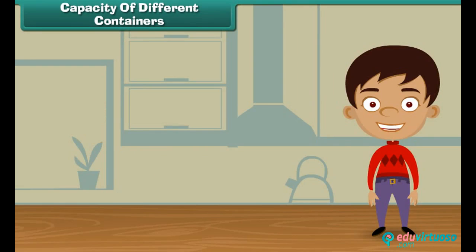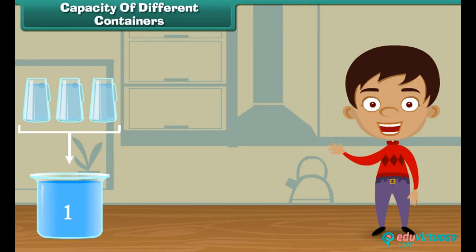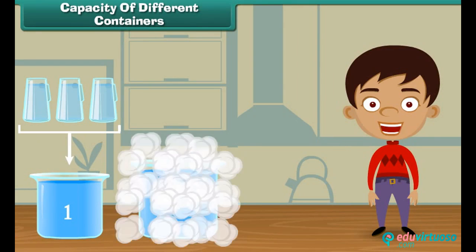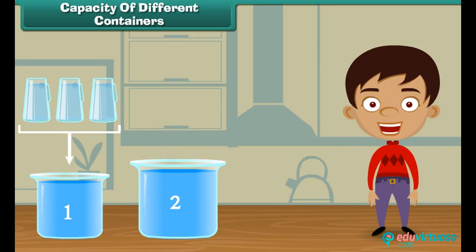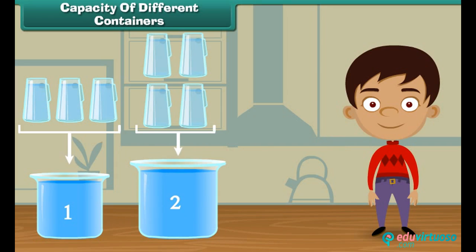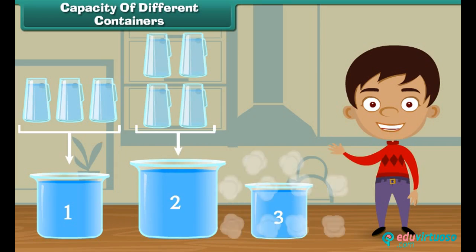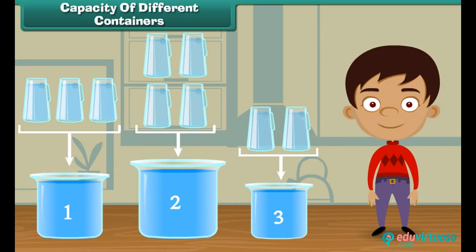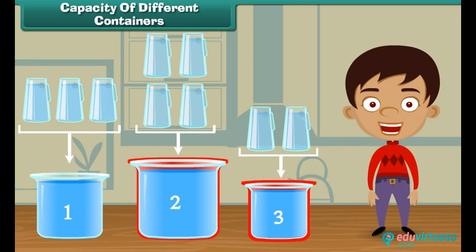Friends, we have seen that vessel one is filled with three jugs of water, vessel two is filled with four jugs of water, and vessel three is filled with two jugs of water. It means vessel three holds the least water, and vessel two holds the most water.